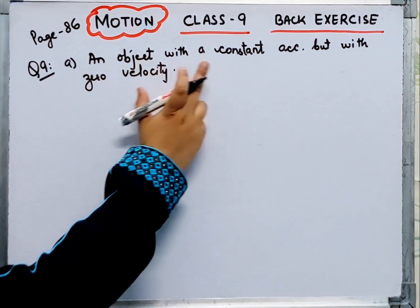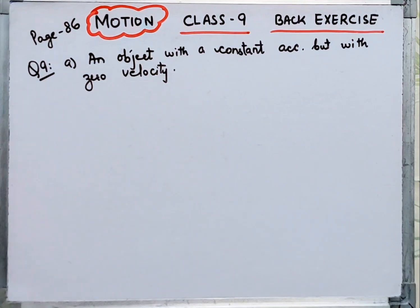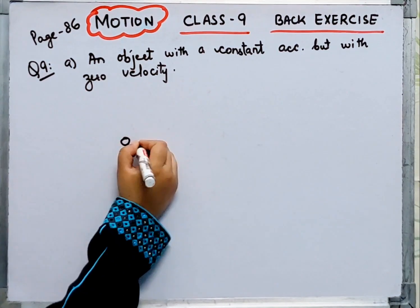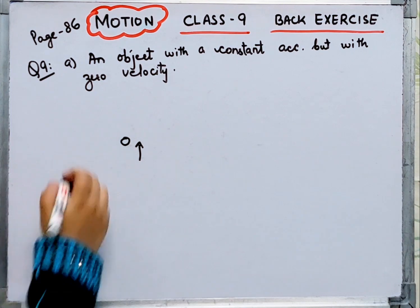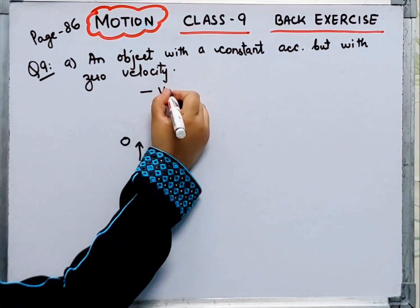So we are saying an object with a constant acceleration but with zero velocity. Suppose there is a ball and I throw that ball up.